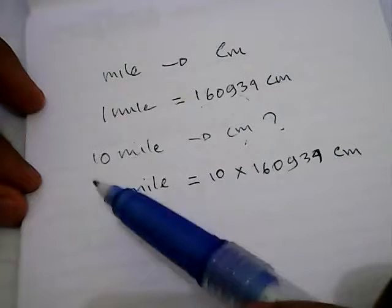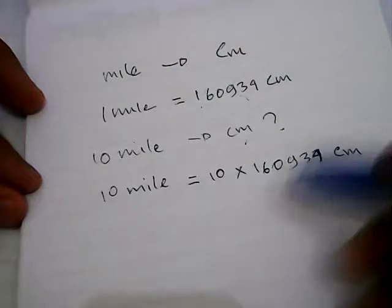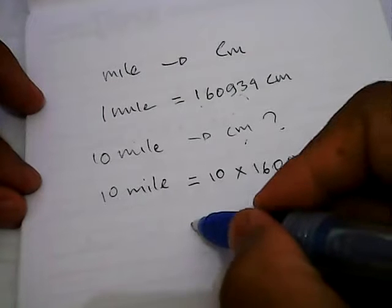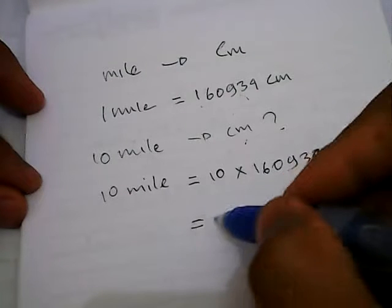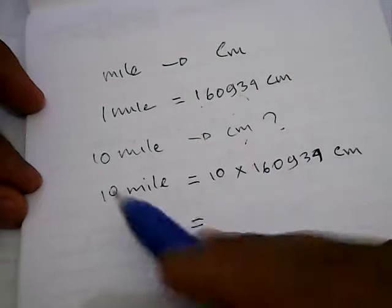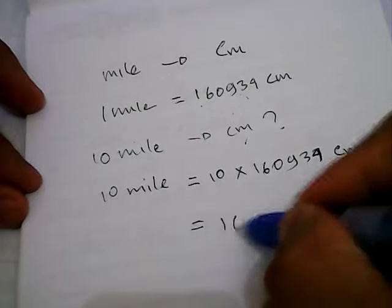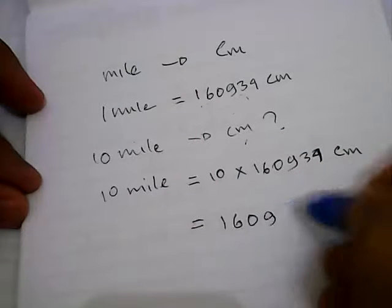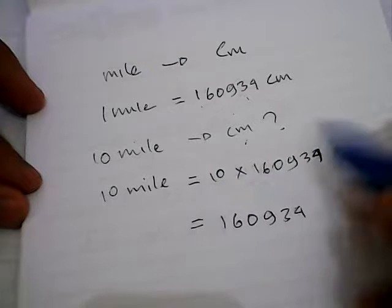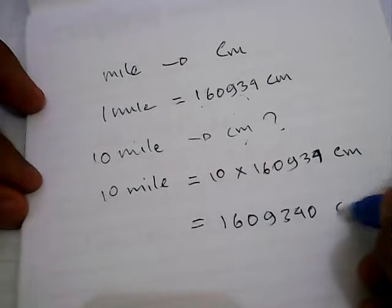...10 multiplied with this number. Let's do the multiplication. So it equals - 10 miles equals 160,934, and we multiply by 10, so we put a 0 over here. And that's the result: 10 miles equals 1,609,340 centimeters. Well, that's it.